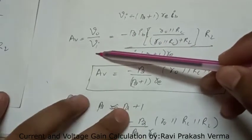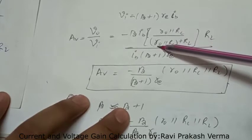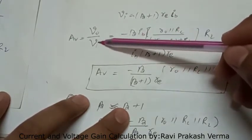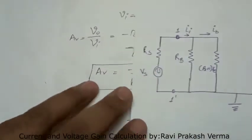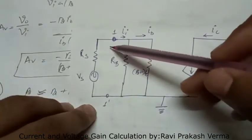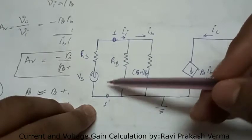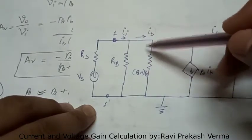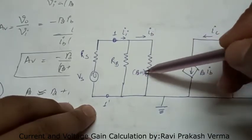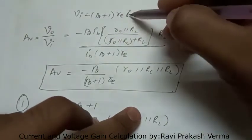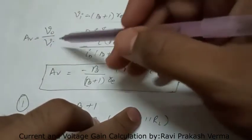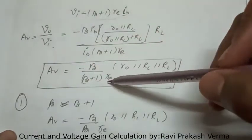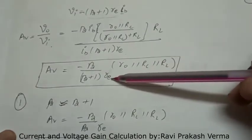The voltage gain A_v equals output voltage upon input voltage. Substituting I naught, we get: A_v equals minus beta IB times (R naught parallel RC) times RL, divided by (R naught parallel RC plus RL). The value of V_I from the input section is obtained as: V_I equals IB times (beta plus 1) times RE. Substituting this and simplifying, the voltage gain is minus beta divided by (beta plus 1), times (R naught parallel RC parallel RL) divided by RE.